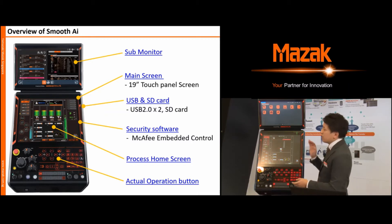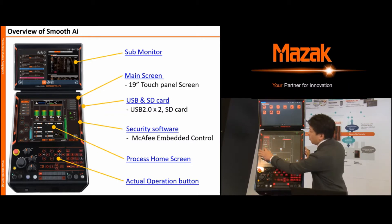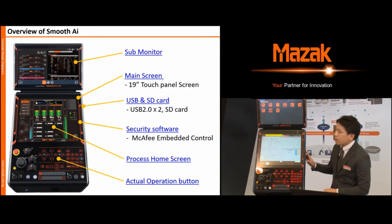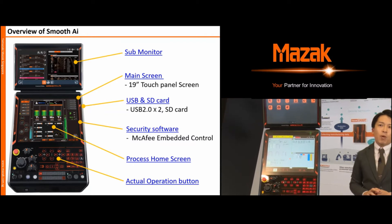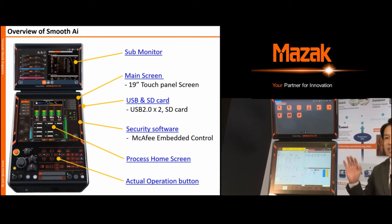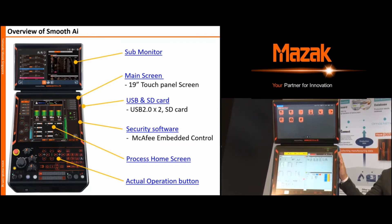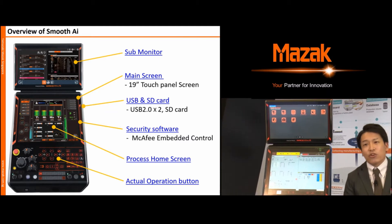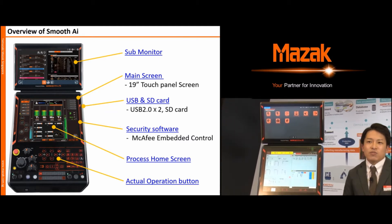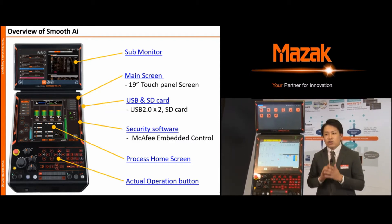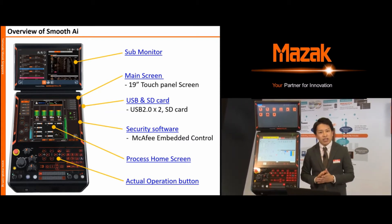Smooth AI has a standard position home screen. When you operate the machine, you can see this position screen, which is unchanged compared to the previous controller. That's why, even after changing the NC controller, you can operate it easily.